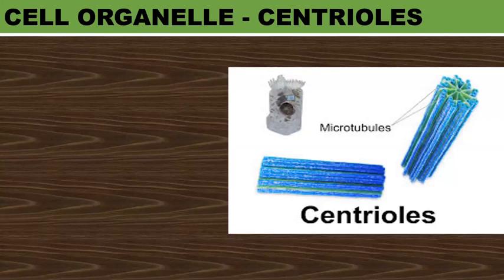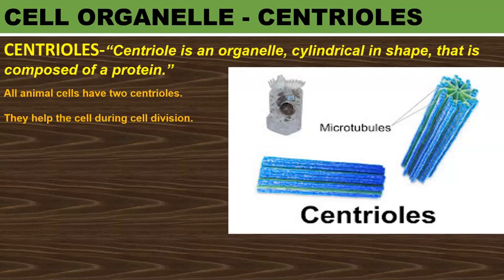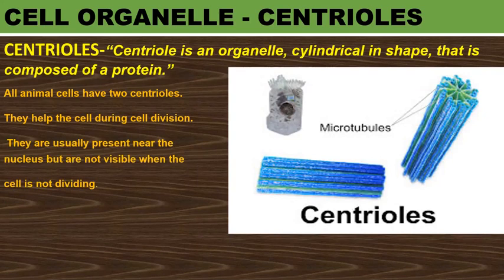Cell organelles. Let's start with a cell organelle called centrioles. Centrioles are cylindrical rod-shaped microtubular structures. They occur in a pair near the nucleus. Centriole is an organelle cylindrical in shape that is composed of a protein. All animal cells have two centrioles. They help the cell during cell division.